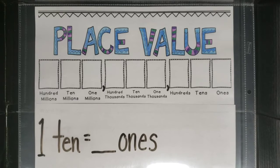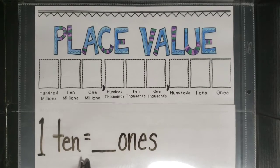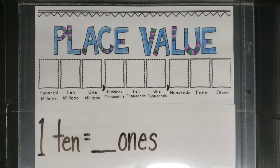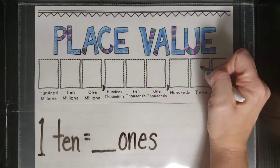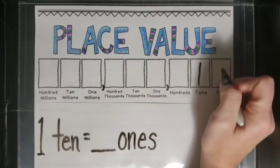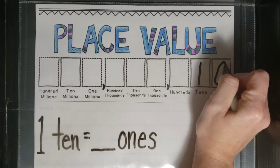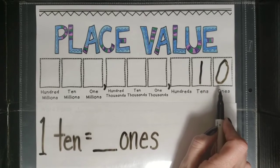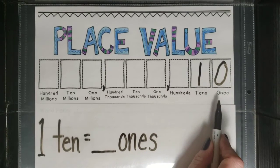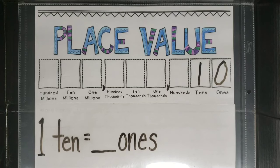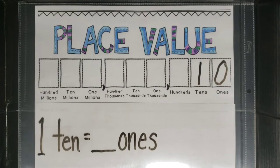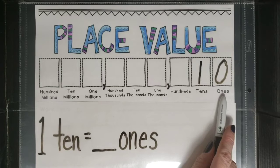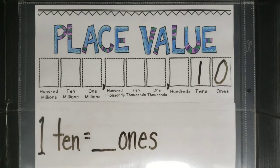We're starting off with one ten equals blank ones. If we were to fill that in: one ten and a zero in the ones place, because one and zero makes ten. A very common wrong answer would be that there are zero ones, because there is a zero in the ones place.